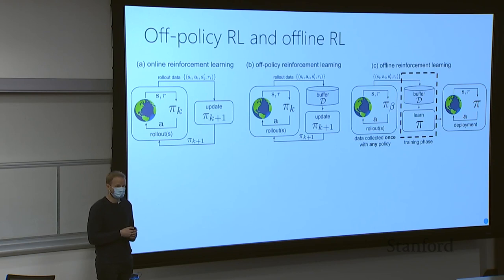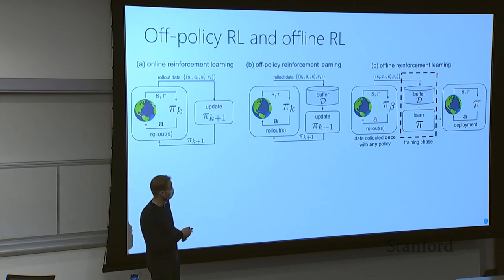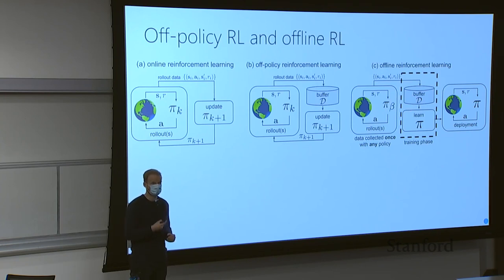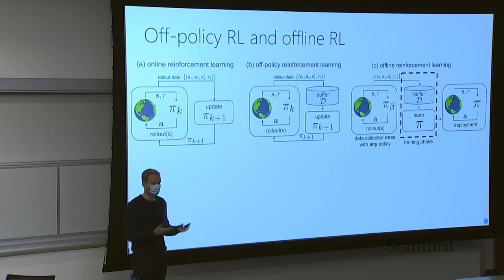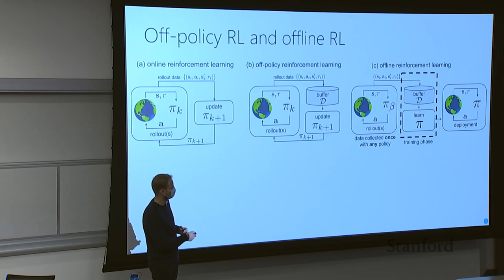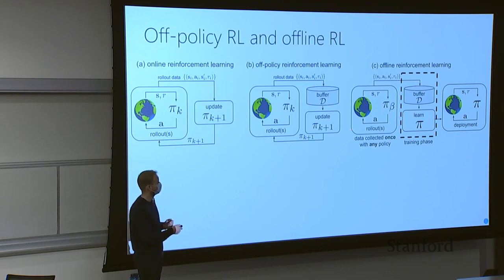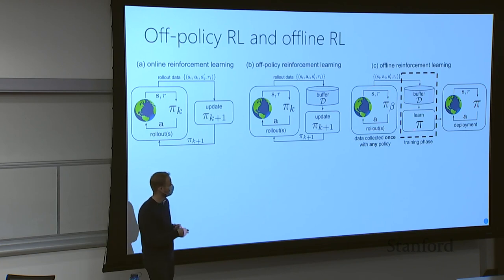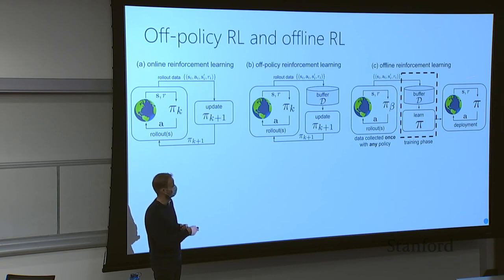In the offline reinforcement learning case, we assume that data is collected only once with any policy, which we call pi beta — the policy of the buffer. We don't know what kind of policy this is; we just have access to samples from it. We have access to the buffer, can sample from it and learn our policy with as many gradient steps as we like, but we can't collect any additional data. We don't have access to the world, so instead we'll just sample from the buffer, learn our policy, and then deploy it.